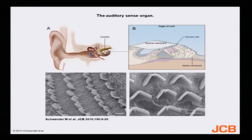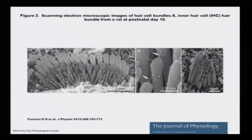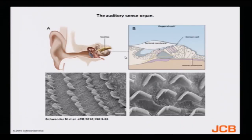Coming back to the structure of the auditory sense organ — if you look at this structure, you will find the outer ear, the inner ear, the middle ear with all the three bones, and here is the inner ear. I told you there are hair cells present. These two micrographs show the arrangement of the hair cells. They are in an array and are sitting inside the cochlea as I have drawn.